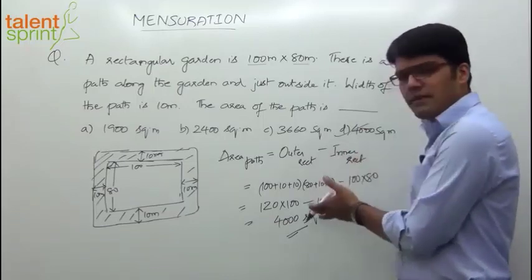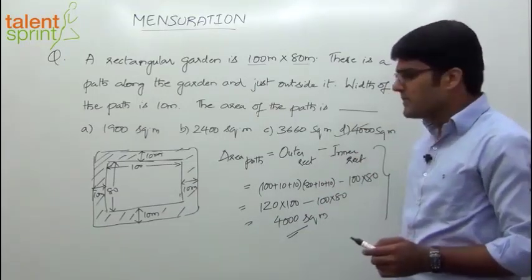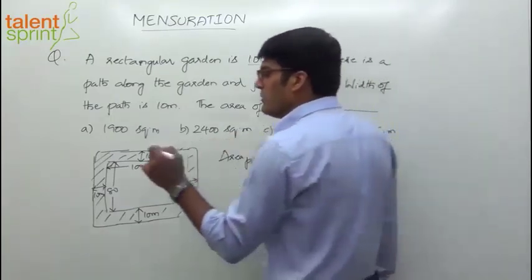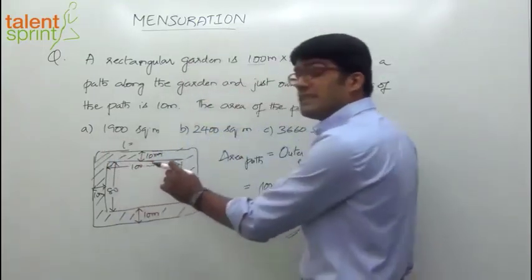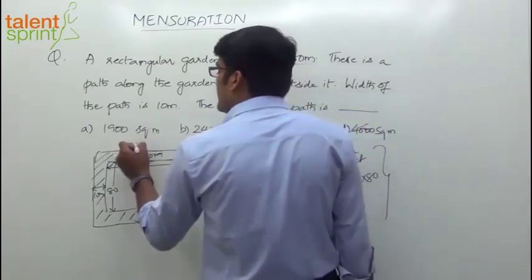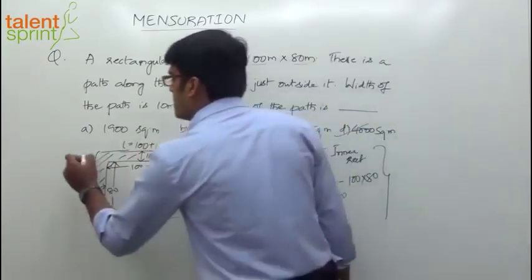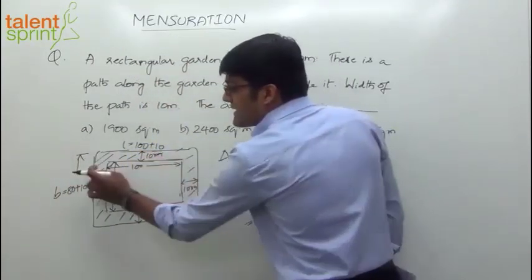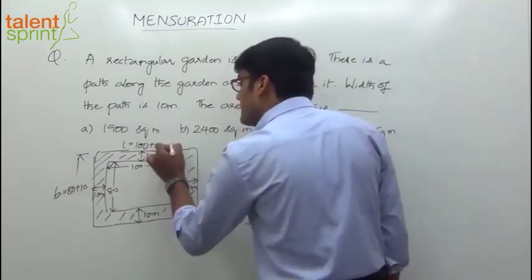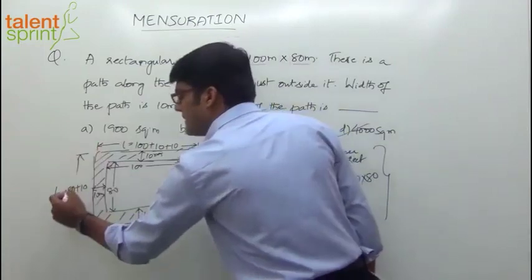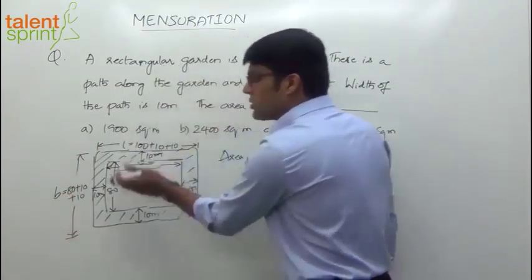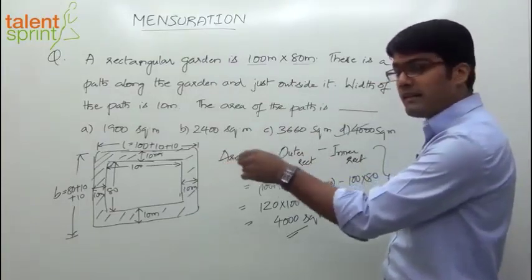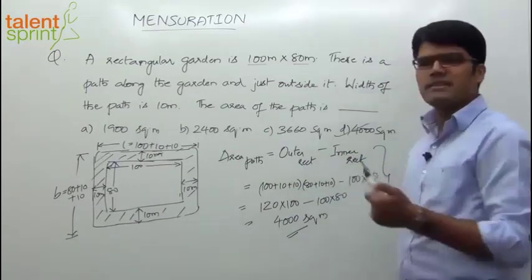So very simple question. You can cut down a few steps here. All you need to be focused about is the length of the outer rectangle. A common mistake is taking the outer length as 100 plus 10 = 110 and breadth as 80 plus 10 = 90, which is wrong. The length is extending by 10 meters on both sides, so 100 plus 10 plus 10 is the actual outer length, and similarly breadth is 80 plus 10 plus 10. So 120 into 100 is the outer rectangle area and 100 into 80 is the inner rectangle area.